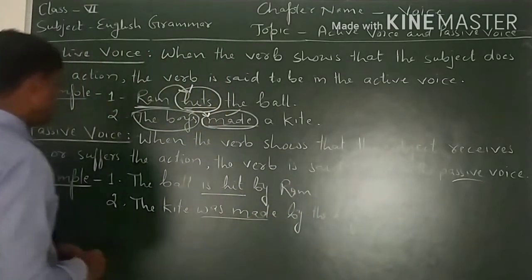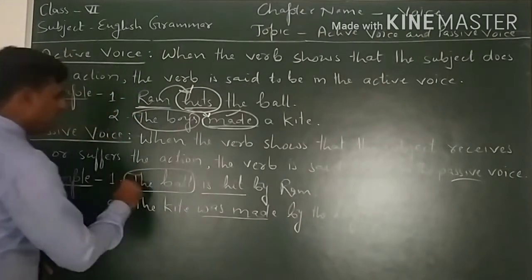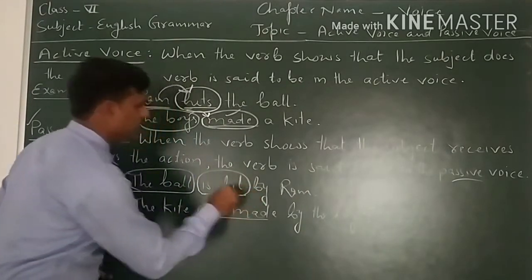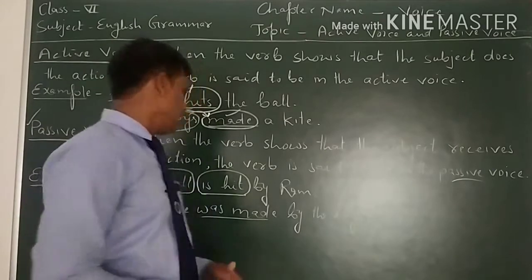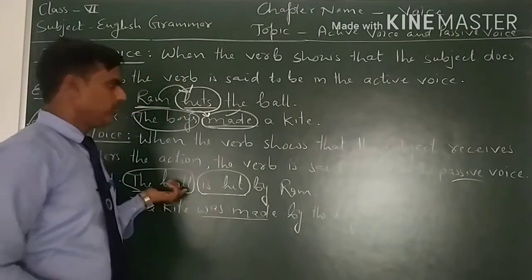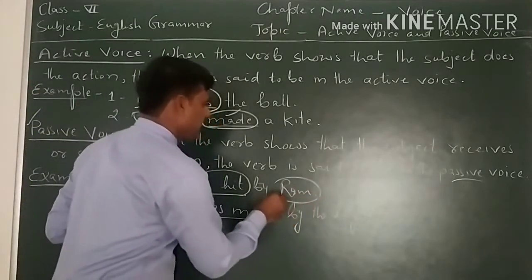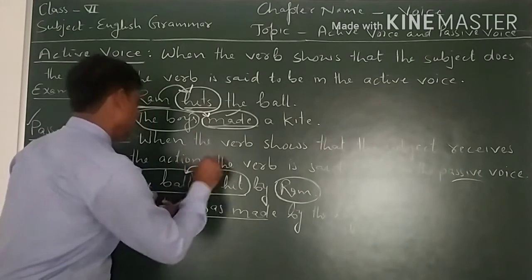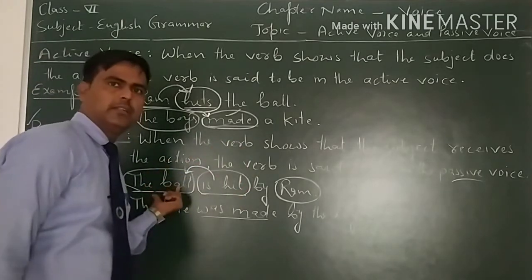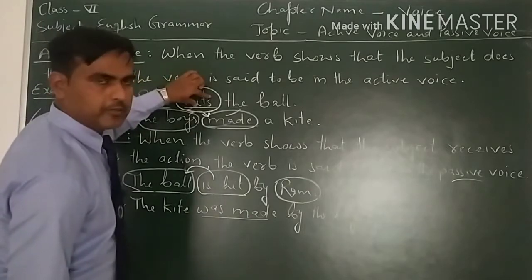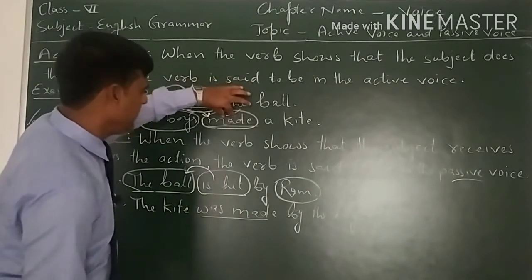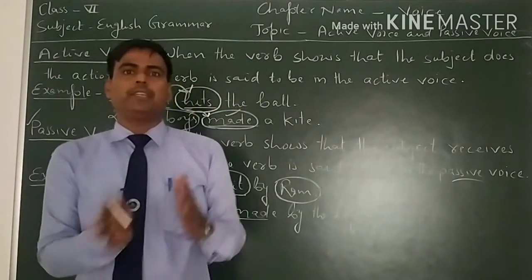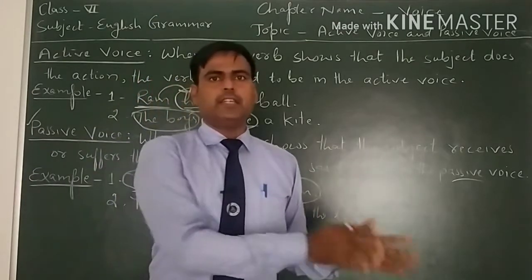Now see how. In the example, the ball is the subject — the ball is hit by Ram. The verb shows that the action is not done by the ball but by somebody else. It means the subject receives the action. In active voice, the subject does the action. In passive voice, the subject receives the action. This is the basic difference between active voice and passive voice.